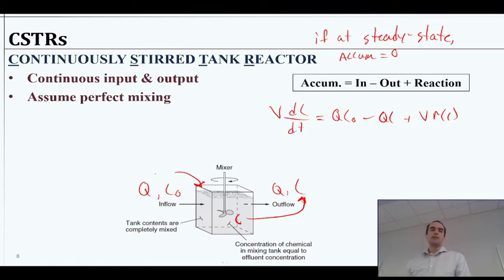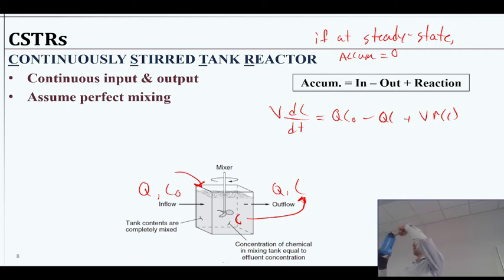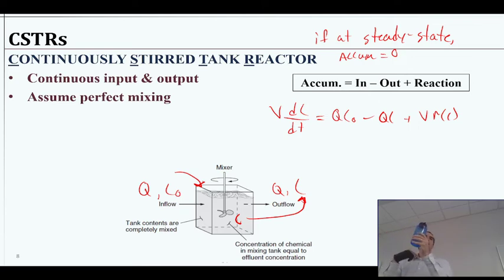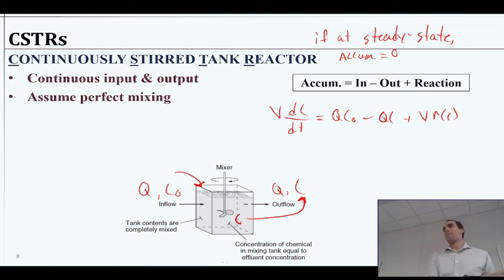That does assume perfect mixing, so there's no short-circuiting where some concentration goes straight to the exit. You could imagine a very poorly designed reactor where you have a hose pipe coming in at the top and a hose pipe leaving the top with no good mixing — all the water on the bottom never goes anywhere, just sits stagnant, and water short-circuits through the top and out. That would be a non-ideal system and we're assuming that's not happening.